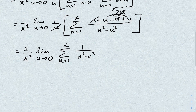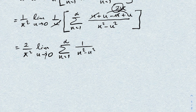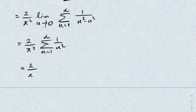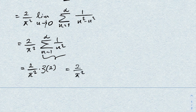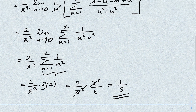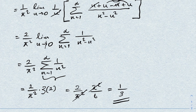As u approaches 0, this becomes (2/π²) times Σ(n=1 to ∞) of 1/n², which is the definition of the Riemann zeta function ζ(2). Since ζ(2) = π²/6, we get (2/π²)·(π²/6) = 2/6 = 1/3. So the answer is 1/3. If you like this type of video, please subscribe to the channel. Thank you for watching.